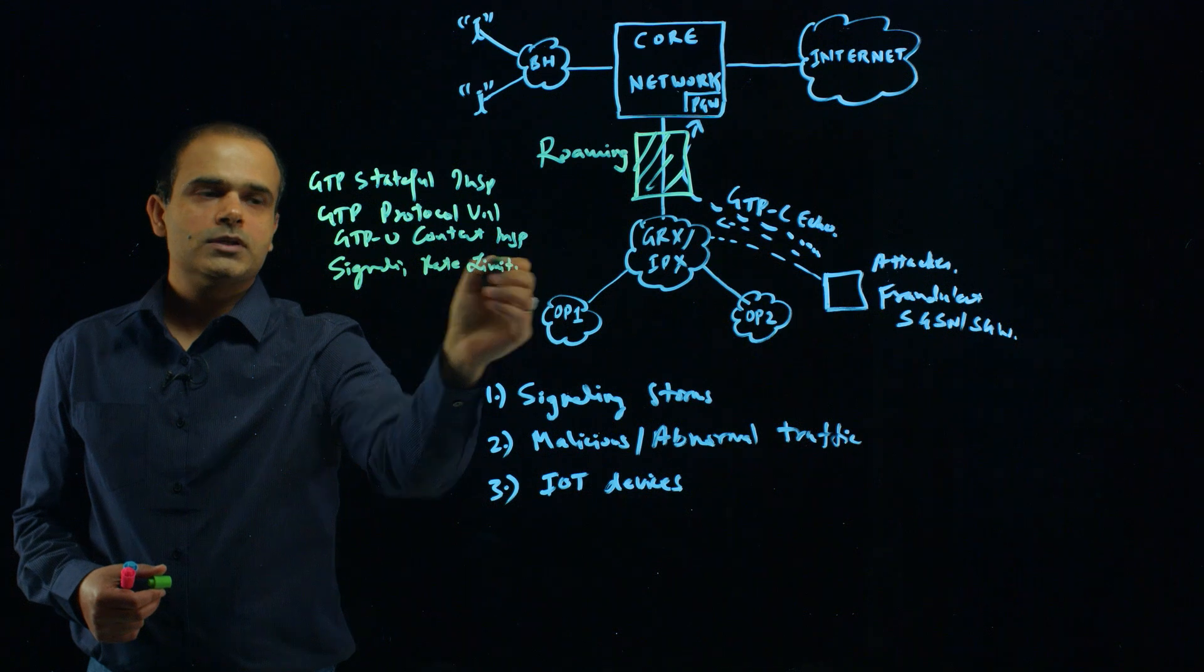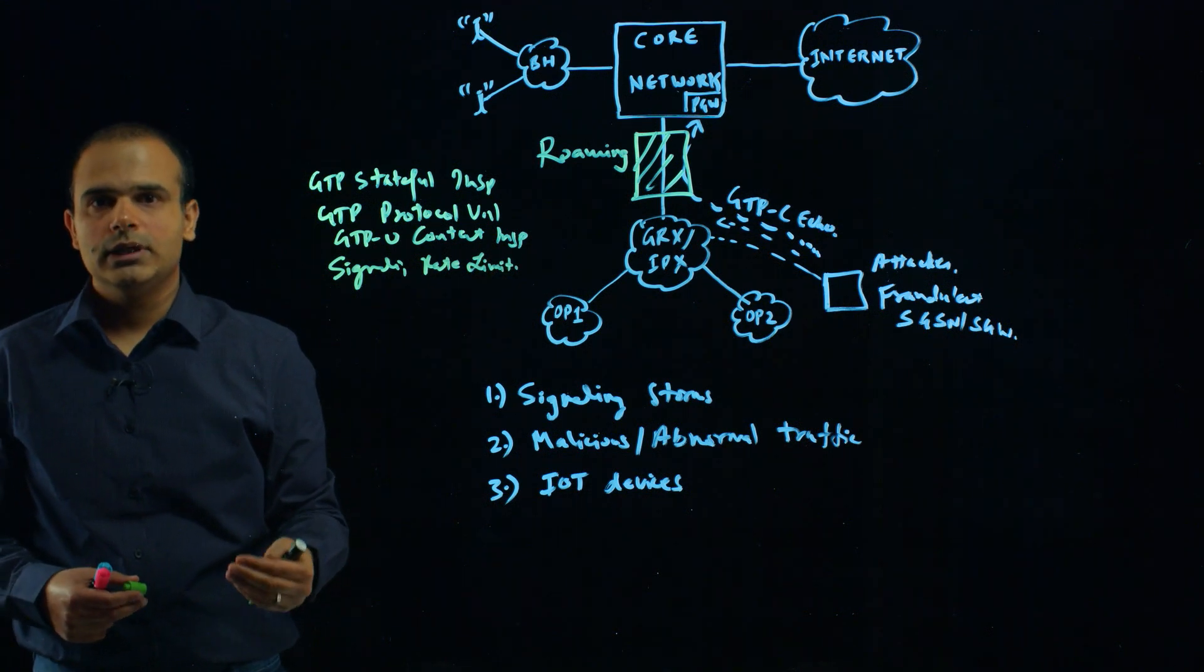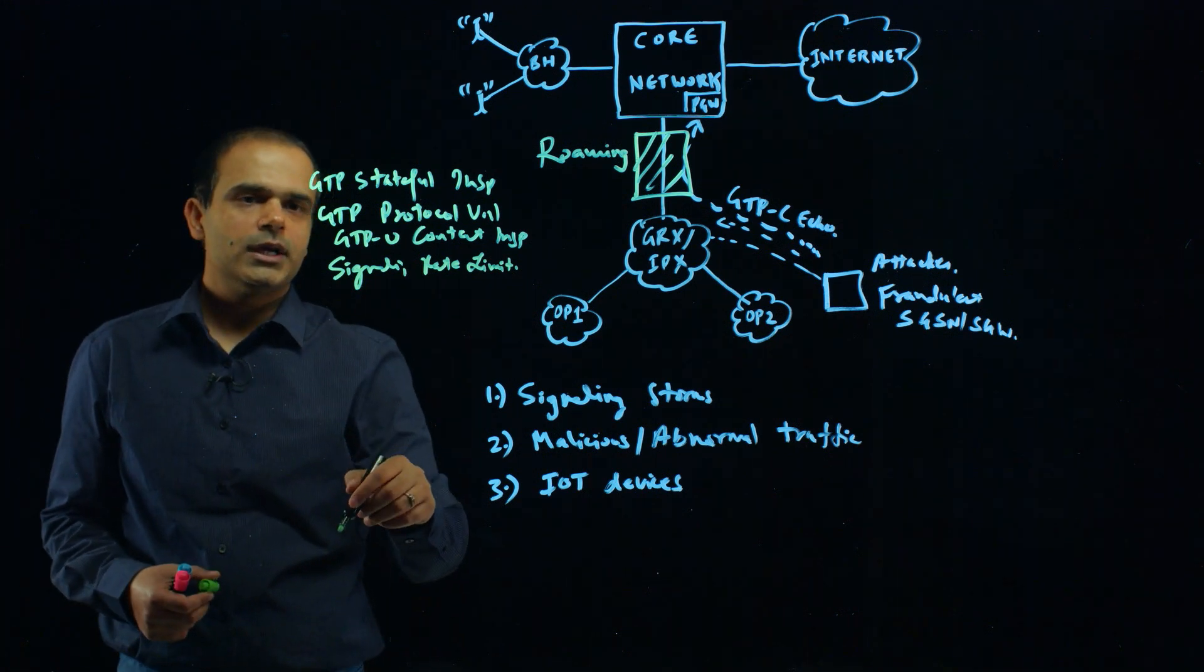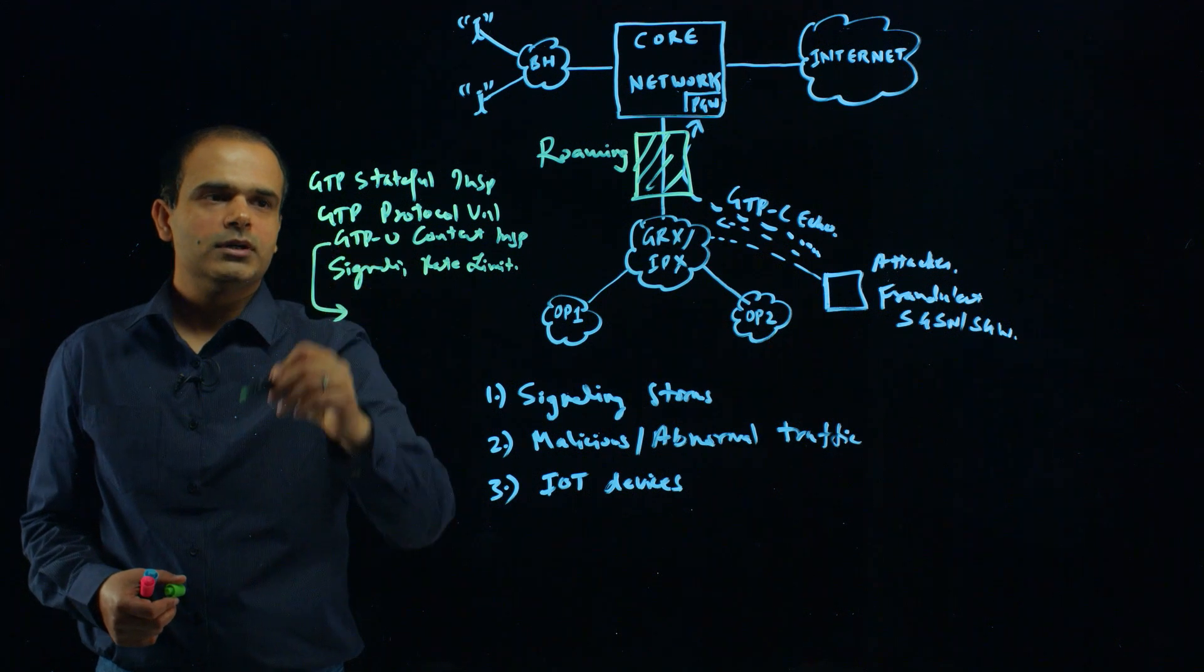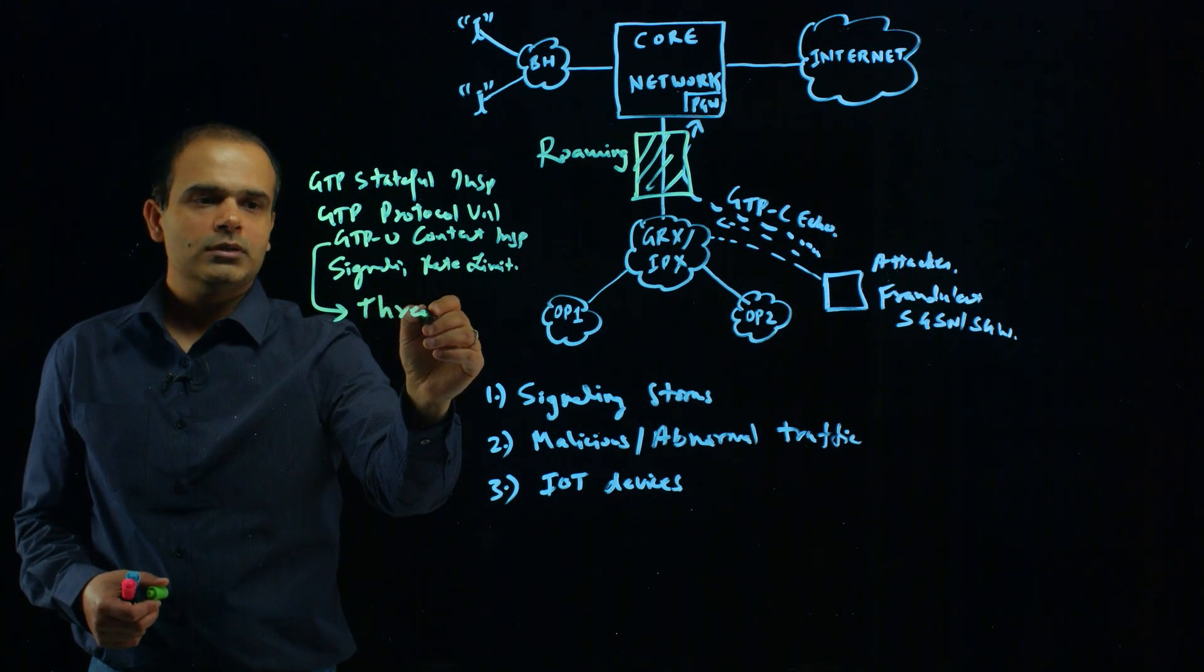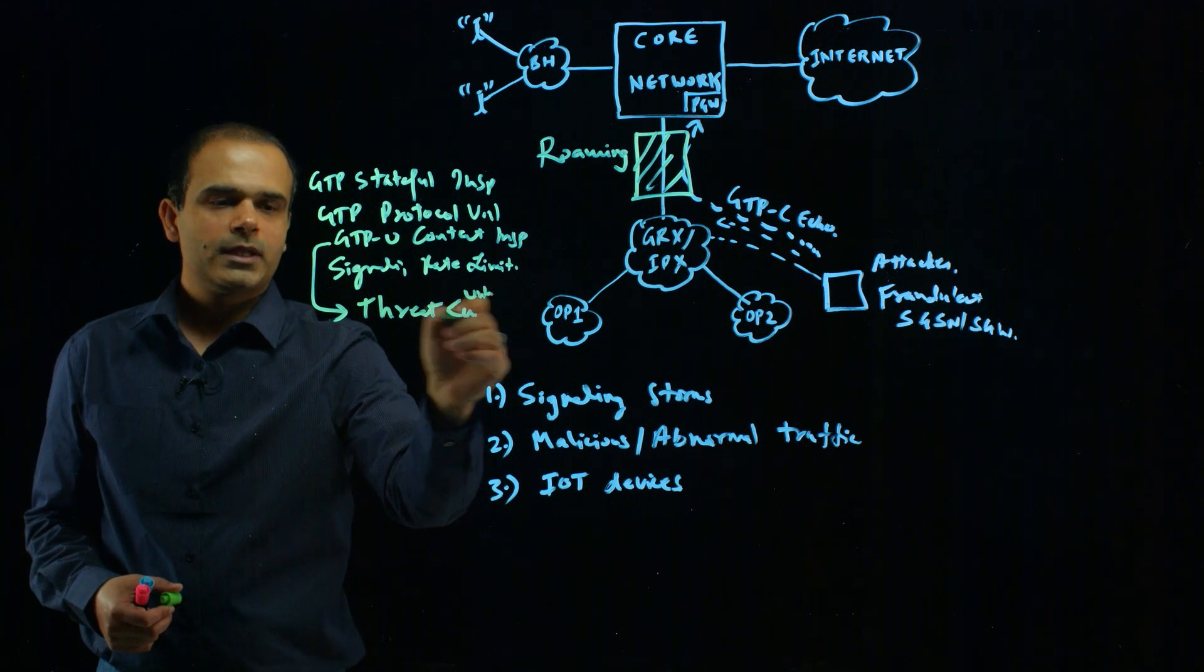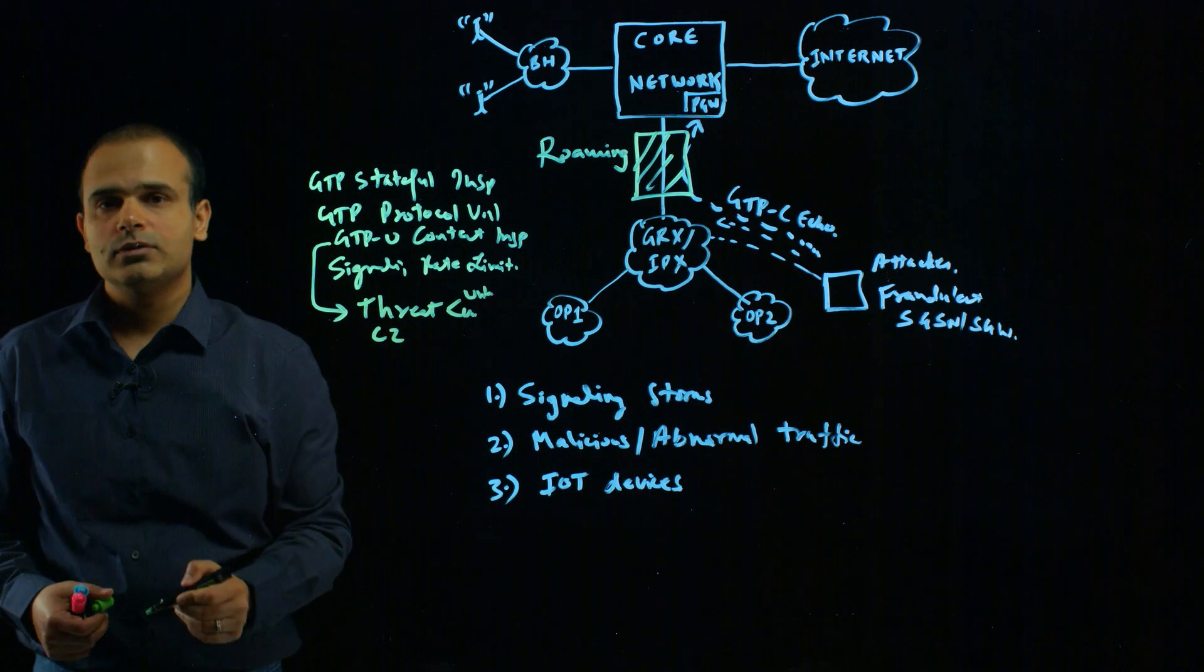This helps you protect your network from all signaling overload situations. In addition to all these capabilities, with the GTPU content inspection capability, you can also prevent the known and unknown threats, as well as detect and prevent command and control.